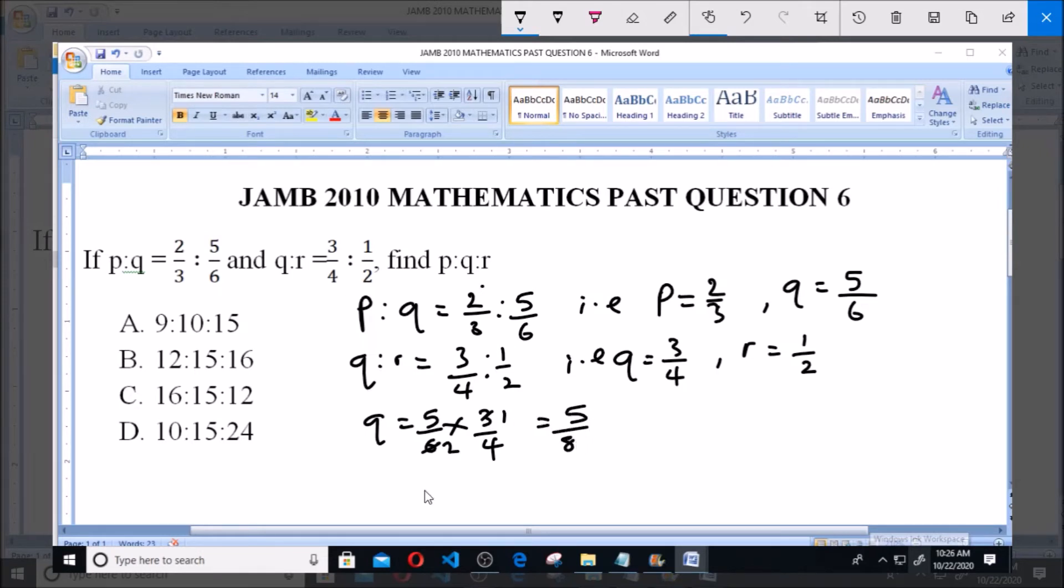So q equals 5/8. Now p ratio q ratio r will be equal to 2/3 ratio 5/8 ratio 1/2. Now looking at this, let's look at the denominators.